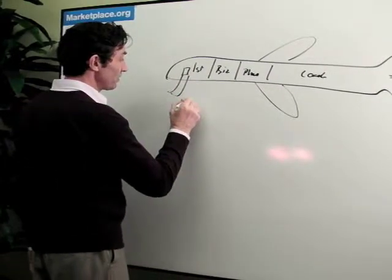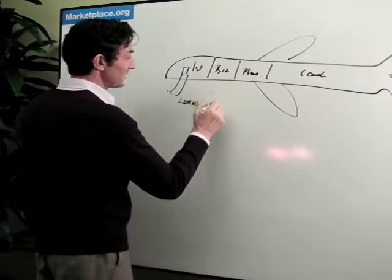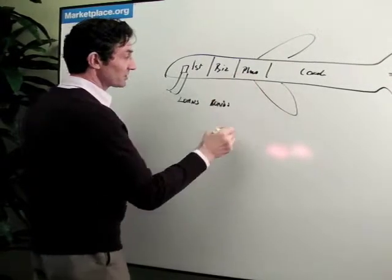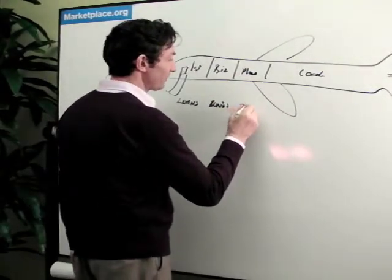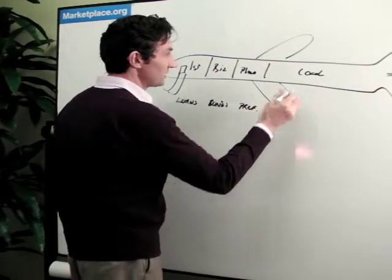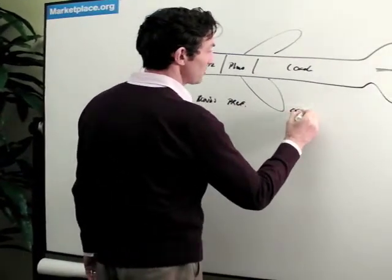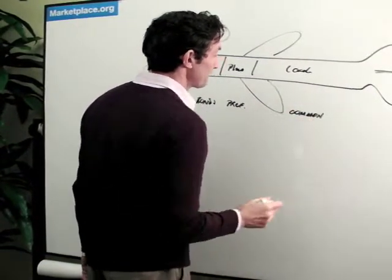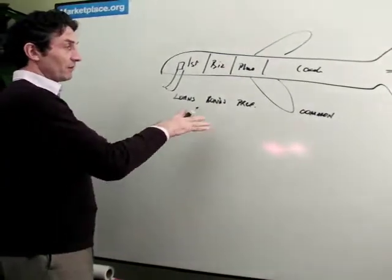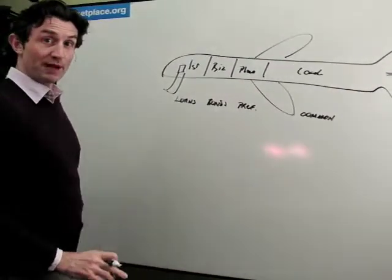So like first class are the loans. Business class like the bonds. Plus coach class is like preferred stock. And then coach class is like common stock.